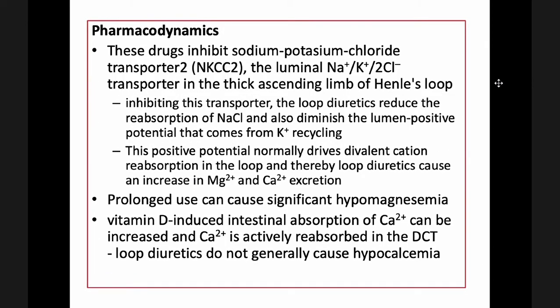Loop diuretics inhibit the sodium-potassium-chloride transporter NKCC2 in the luminal membrane of the thick ascending limb of Henle's loop. By inhibiting this transporter, loop diuretics reduce reabsorption of sodium chloride and diminish the lumen-positive potential that comes from potassium recycling. This positive potential normally drives divalent ion reabsorption in the loop, and thereby loop diuretics cause an increase in magnesium and calcium excretion. Prolonged use can cause significant hypomagnesemia.